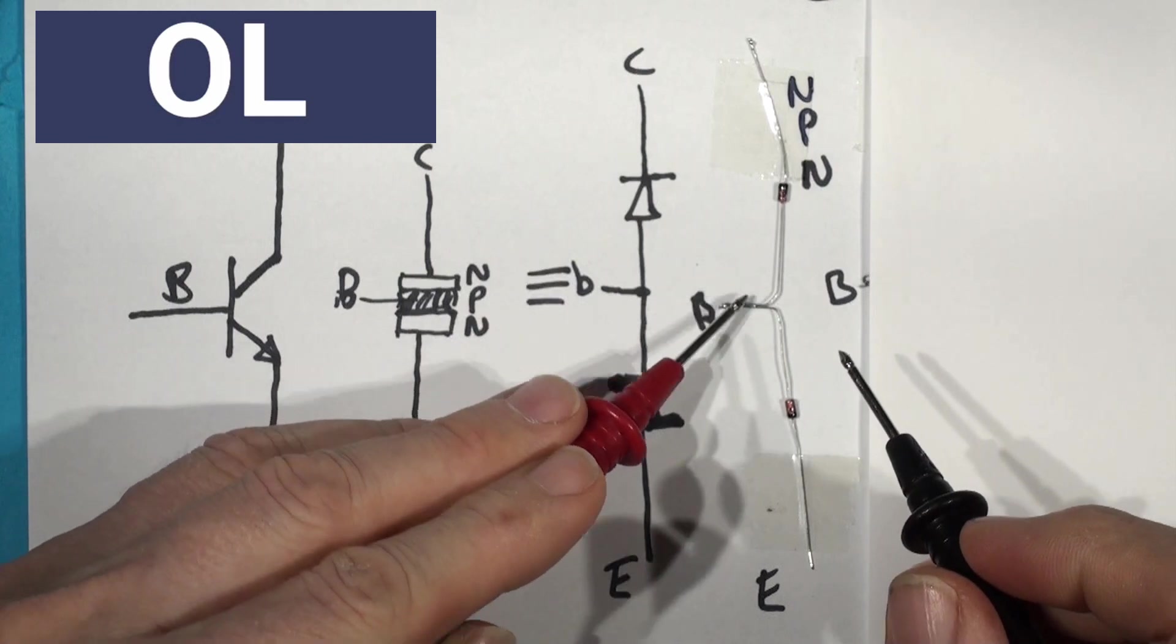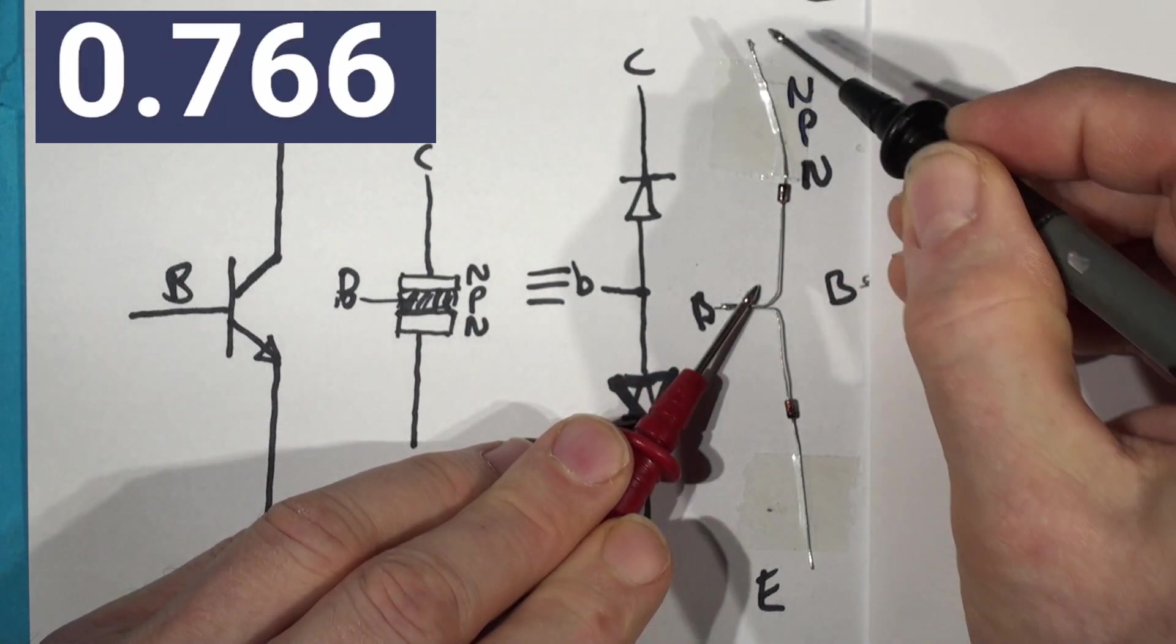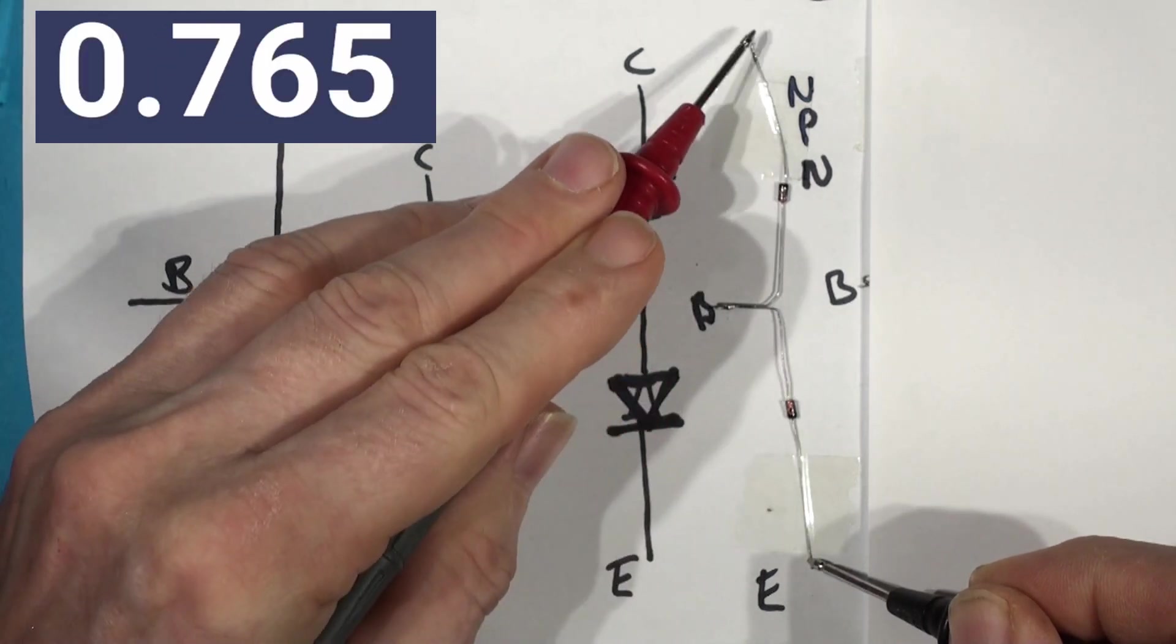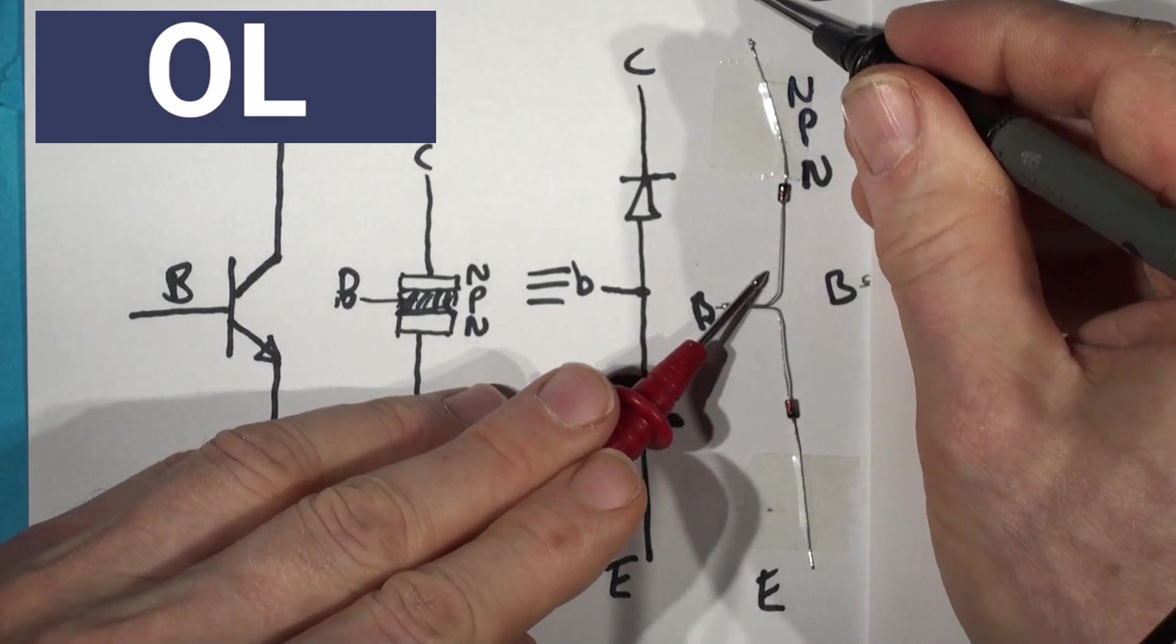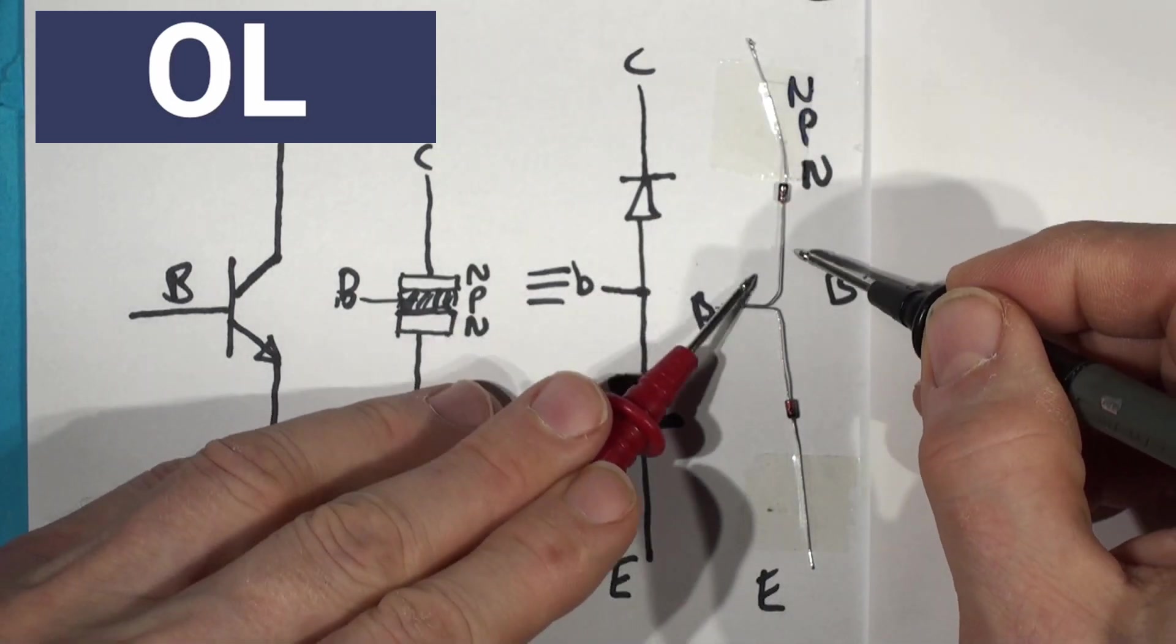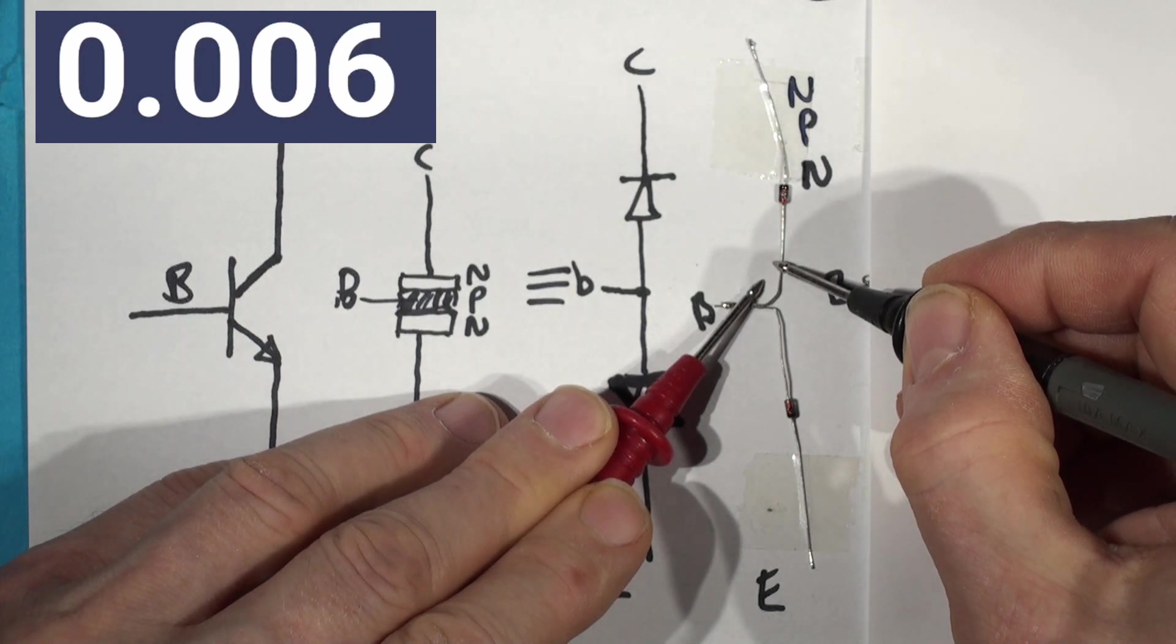So you know that it's an NPN if you see this: base collector, base emitter, and there's no shorts. If there was a shorted base collector short, you'd get obviously a short, 0 volts, or a buzz as well if you had the buzzer switched on.